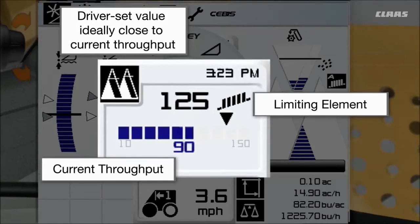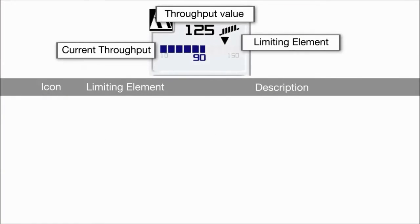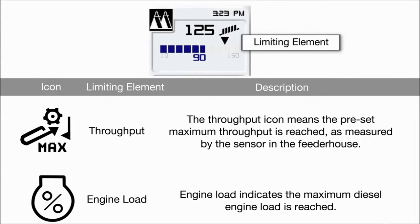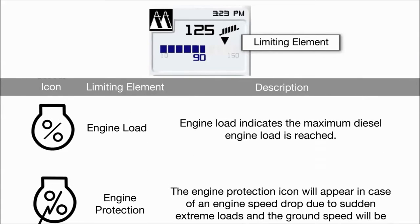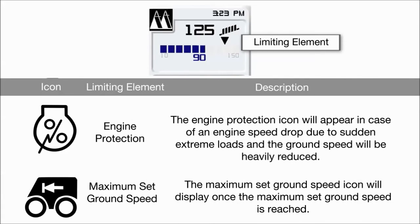The number on the display is only an indicator of crop layer thickness in the feeder house. This number depends on the crop type and condition. The CruisePilot hotkey menu will display icons to alert you of any limiting elements that are limiting ground speed. The throughput icon means the preset maximum throughput is reached as measured by the sensor in the feeder house. Engine load indicates the maximum diesel engine load is reached. The engine protection icon will appear in case of an engine speed drop due to sudden extreme loads, and the ground speed will be heavily reduced.